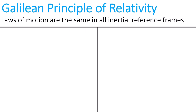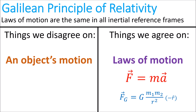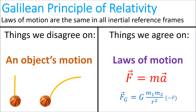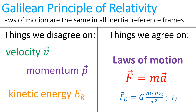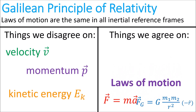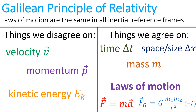To sum up Galilean relativity: in different reference frames, observers will disagree on the motion of objects such as a falling ball, and therefore disagree on an object's velocity, momentum, and kinetic energy. But there are things that all observers agree on in all reference frames: the most important being the laws of motion. Observers also agree on the passage of time, size and space, and the mass of objects.